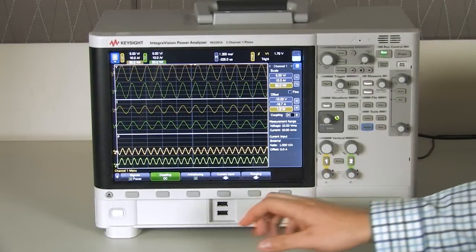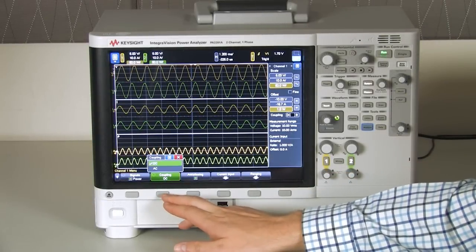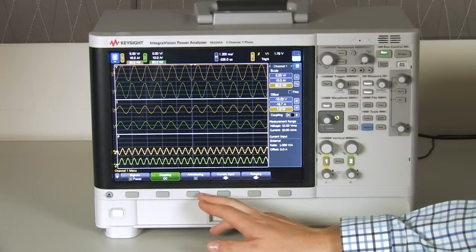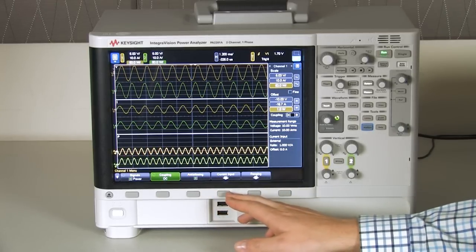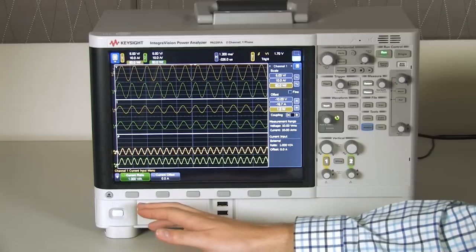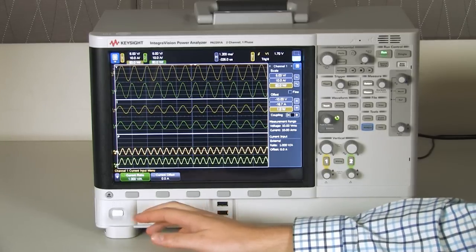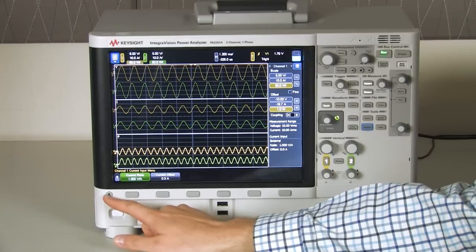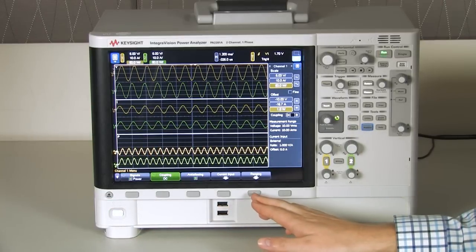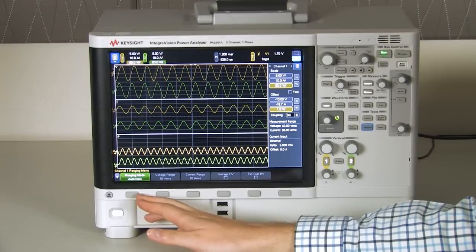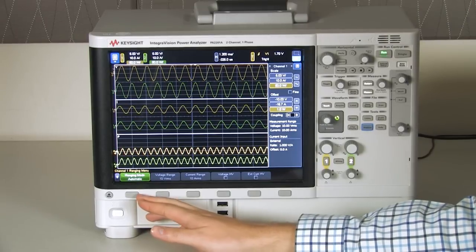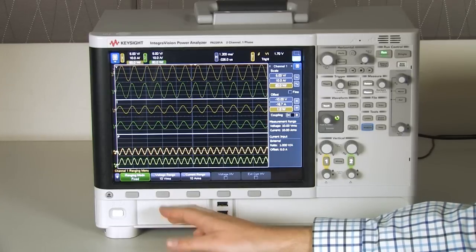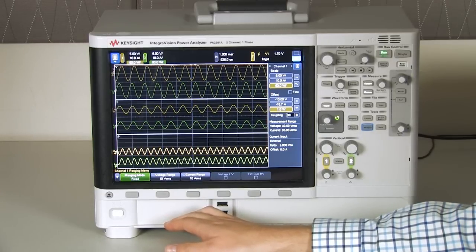If we go into channel 1 here, we can change the coupling to be either AC or DC coupling, enable or disable anti-aliasing, and we can have control of the current inputs. If we have a current probe hooked up, we can set the ratio and the offset for our probe. The last major control we have under the channel menu is ranging. We have either automatic or fixed ranging. Fixed ranging is best when you're trying to capture small transient events that may not be picked up by automatic ranging.